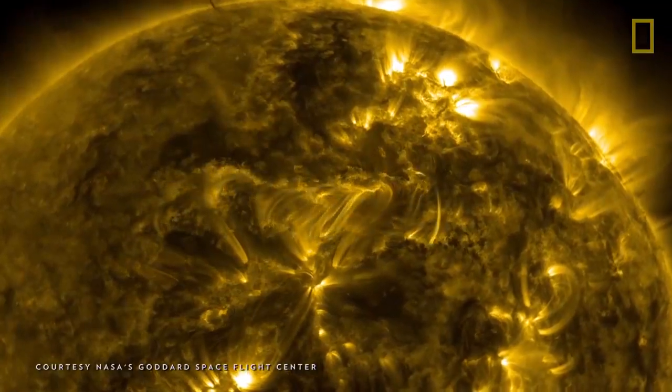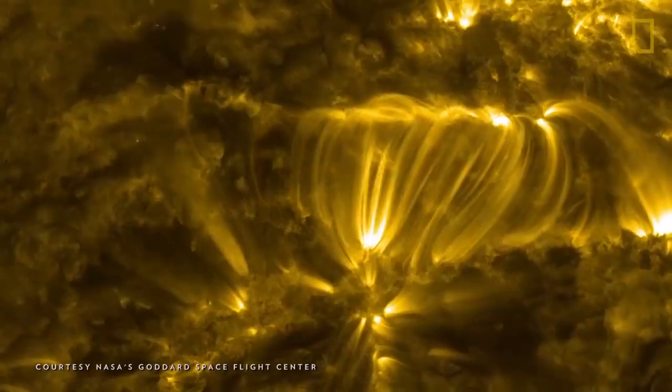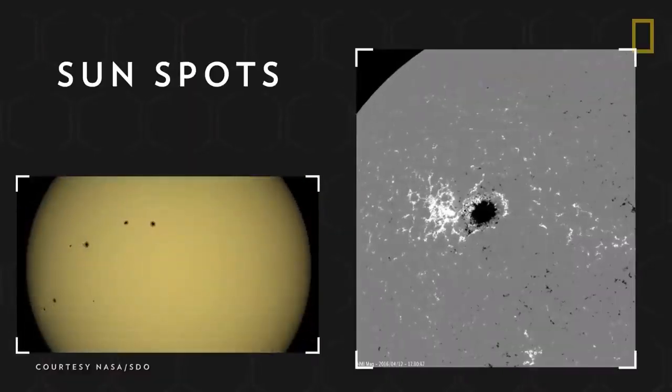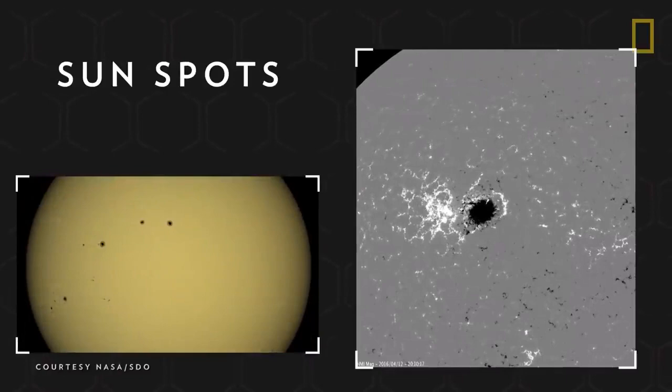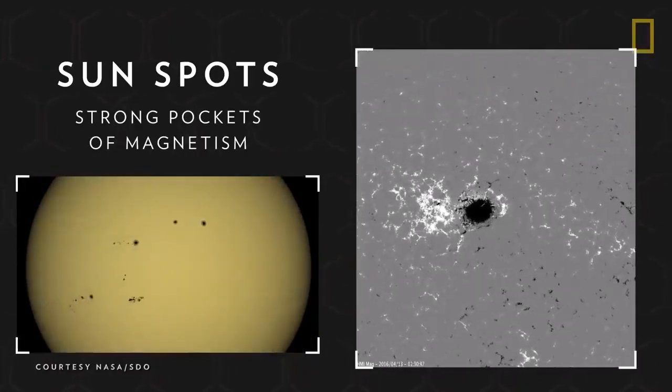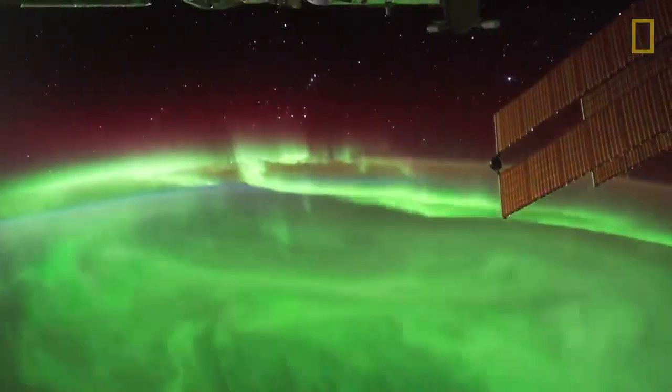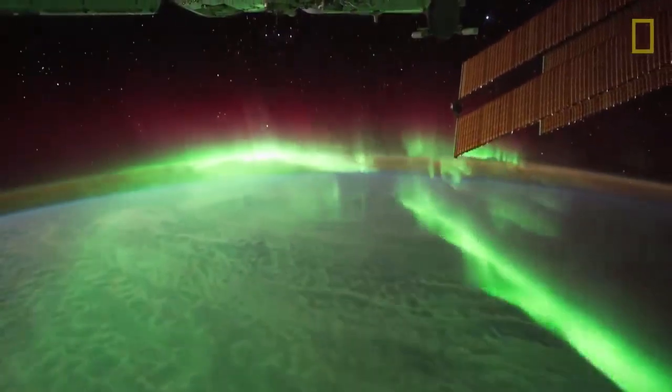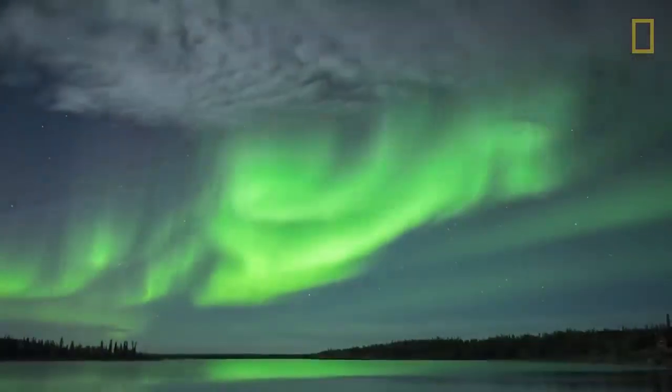Although the sun's magnetic field is invisible to the naked eye, its effects are noticeable. On the sun's surface are dark areas called sunspots, which mark strong pockets of magnetism. On Earth and on some of the other planets, the sun's magnetic field interacts with their atmospheres, resulting in beautiful auroras.